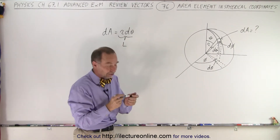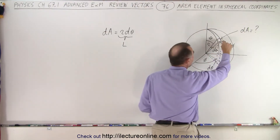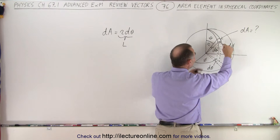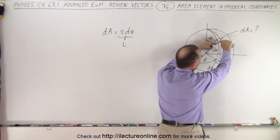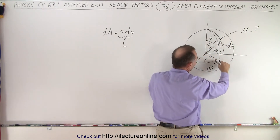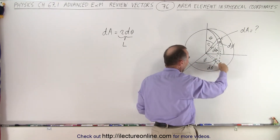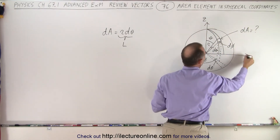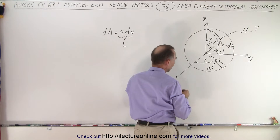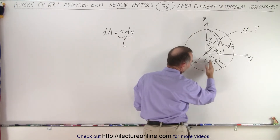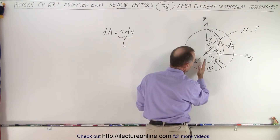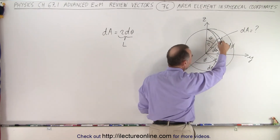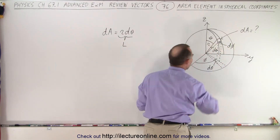So dA will be r·dθ, which represents the length of the rectangle, and then we have to multiply times the width to get the area. The width here would be r times the change in the arc length in that direction, which would be dφ. Notice the two edges of that rectangle come down here — you can see the two lines that come from the origin going outward on the xy plane. The angle from the x-axis to the first line is φ, and the angle to the next line is φ plus dφ, so that length would be r·dφ.